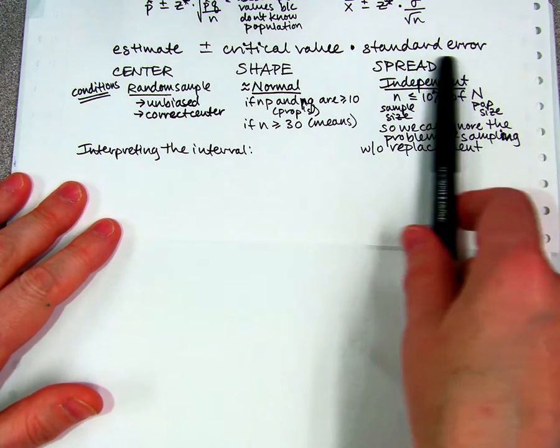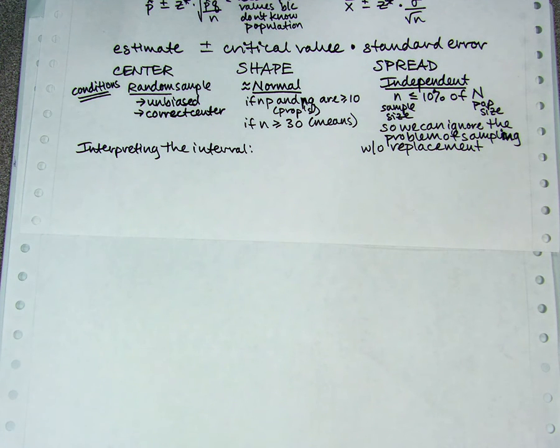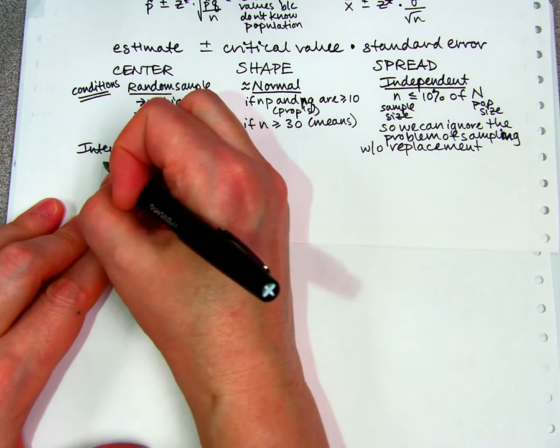After you've calculated this interval, what does it actually mean? Remember, it is an interval of plausible values. The way to interpret it correctly is to say this is how confident we are.